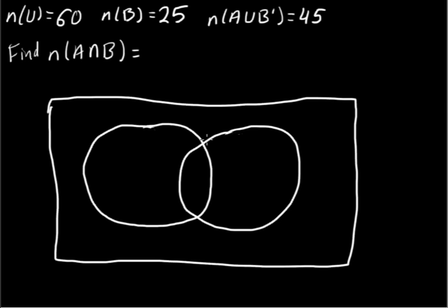The problem reads, let A and B be subsets of a universal set U. The number of elements in U equals 60, the number of elements in B equals 25, and the number of elements in A union B complement equals 45. This could also be read A union B prime.